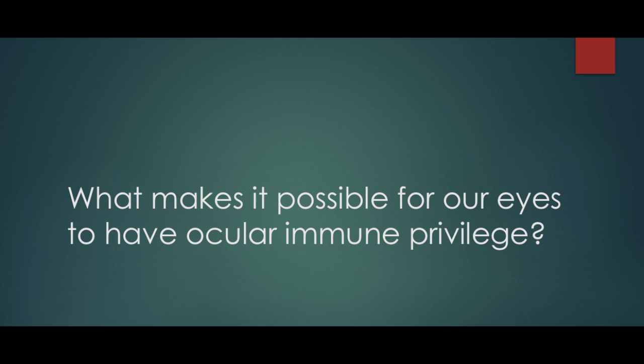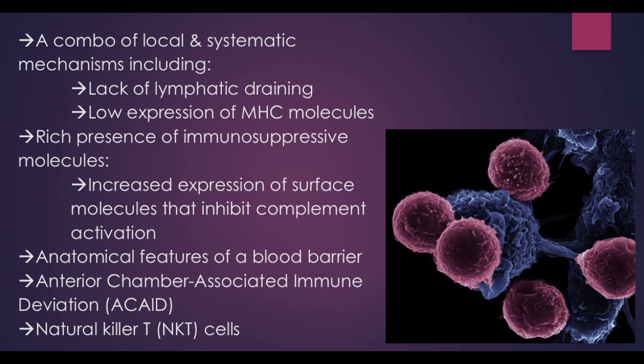What makes it possible for our eyes to have ocular immune privilege? Our eyes have many features that contribute to it being an immune-privileged site. These include a combination of local and systemic mechanisms, such as the lack of lymphatic draining, low expression of MHC — the major histocompatibility complex — molecules, and the rich presence of immunosuppressive molecules, including increased expression of surface molecules that inhibit complement activation.